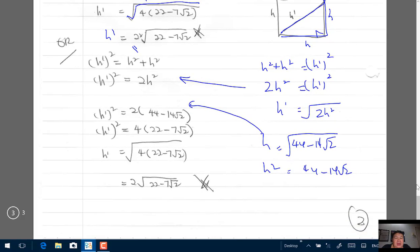I took out 2 as a common factor, so left behind is 4, which is 2 times 2, giving 4 bracket 22 minus 7 root 2. So h1 will be root of the whole thing. Root of 4 is 2 times root of 22 minus 7 root 2, which is the same result. You can choose either way to prove Pythagoras theorem.